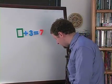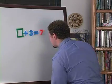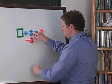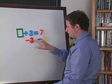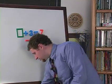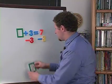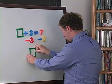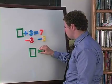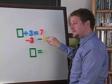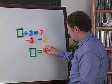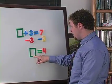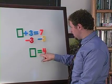I just took away 3 from each side. So I have 3 minus 3, which is equal to 0. Which means that on this side of the equation, I really just have the box left. And that is equal to 7 minus 3, which is 4. So that means I know that the box is equal to 4.